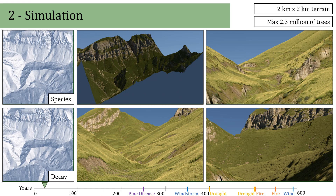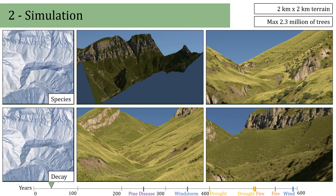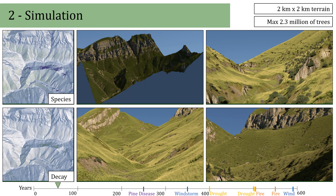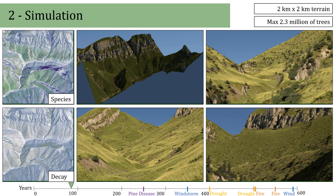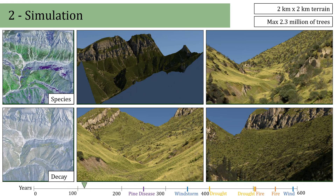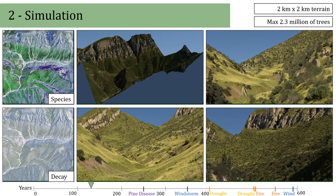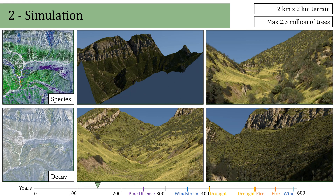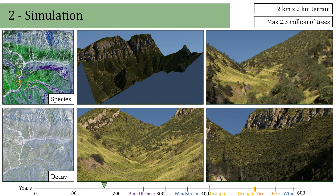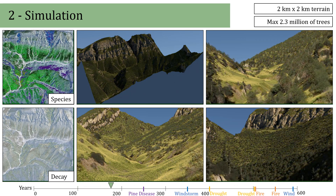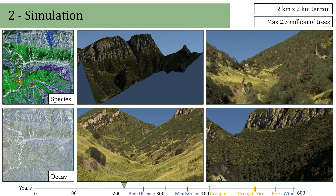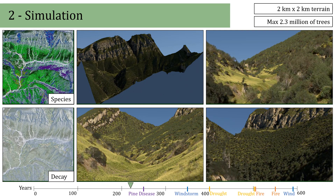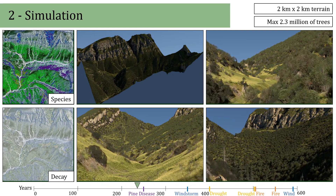Our experimental ecosystem simulation covers a 4-kilometer-squared terrain and produces over 2.3 million trees in 600 years. We illustrate how over the years different events improve the realism by introducing variety to the scene.